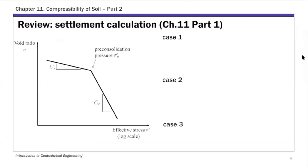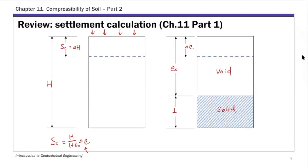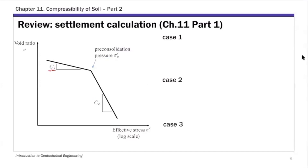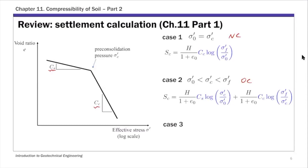For this settlement calculation I gave you three cases — Case 1, 2, and 3. Sc is related to void ratio change delta e, and delta e is related to effective stress change delta sigma prime through the recompression index and compression index. The three cases are based on the relationship between current effective stress, pre-consolidation pressure, and final effective stress: Case 1 is NC clay, and Cases 2 and 3 are both OC clays. This is just a quick review of Part 1.